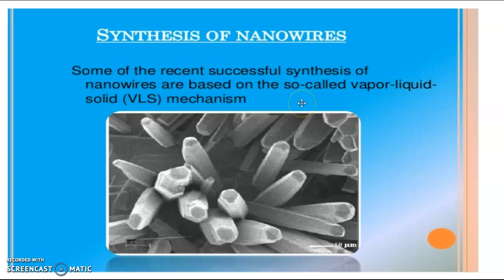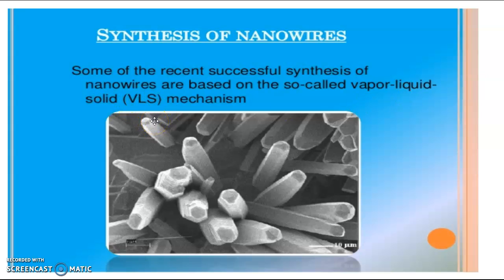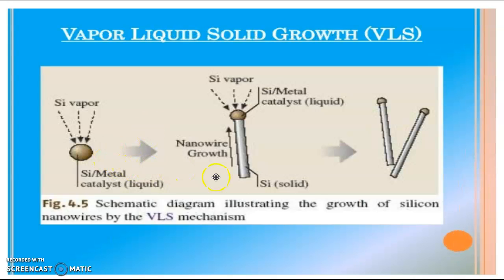Next, we will move to the synthesis of nanowires. We have a method called the vapor-liquid-solid (VLS) mechanism, from which there will be a growth of nanowires. All three states — vapor state, liquid state, and solid state — are involved in the synthesis of nanowires. This image explains the silicon nanowire growth; it is a schematic diagram illustrating the growth of a silicon nanowire by the VLS mechanism.